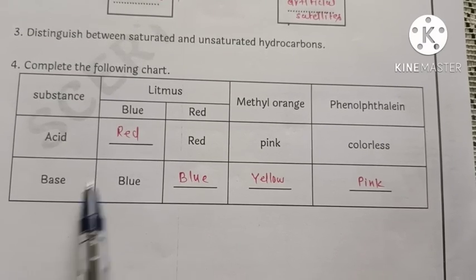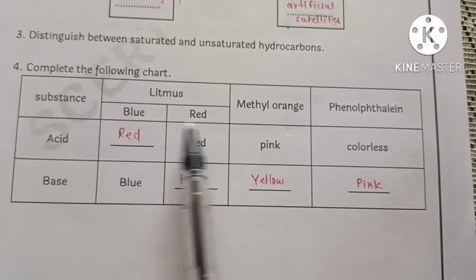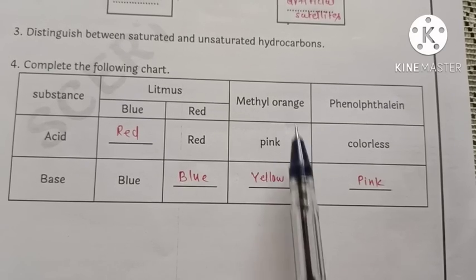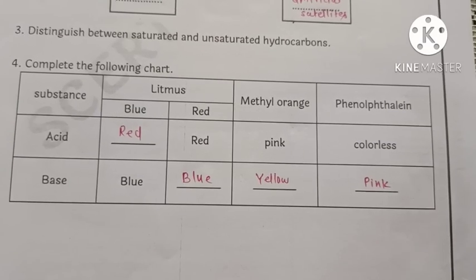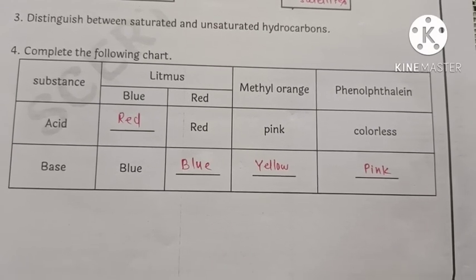In base: blue remains same blue and red turns to blue. Methyl orange: yellow. Phenolphthalein: pink. So this chart is complete.